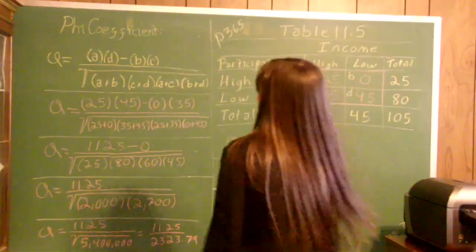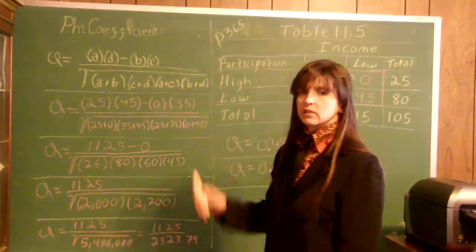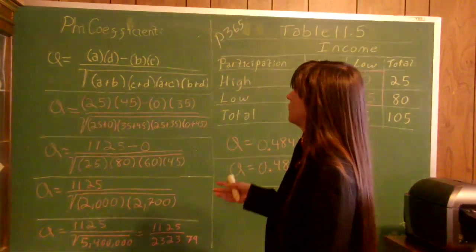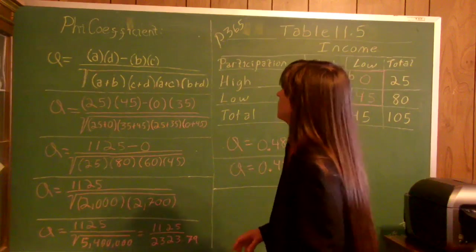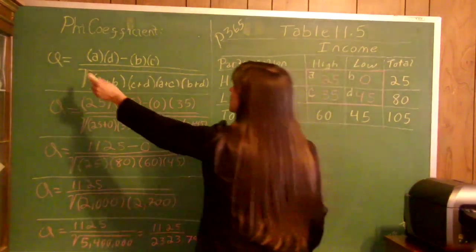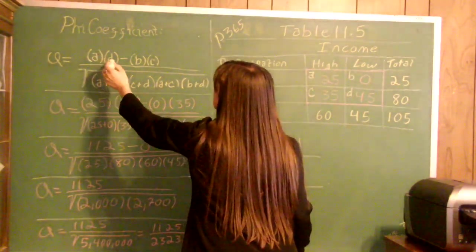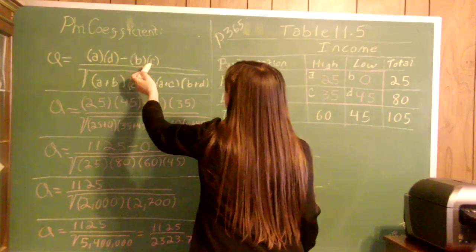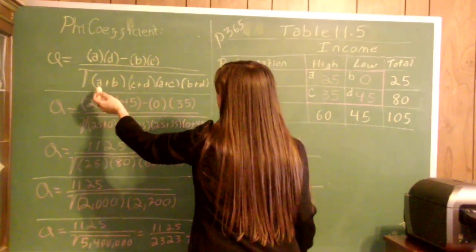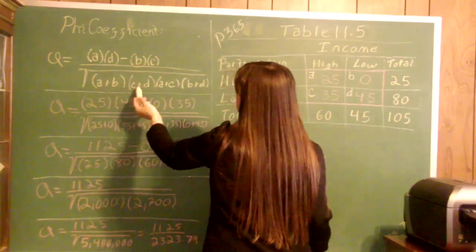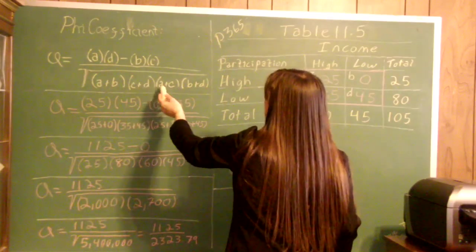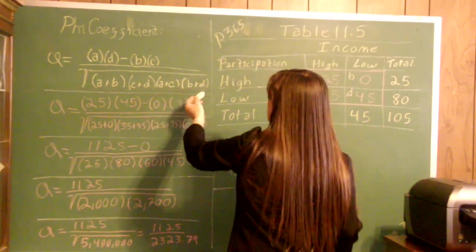Hello. This one is again from Sorkin Chapter 11. This is the V coefficient: V equals (A×D - B×C) over the square root of [(A+B)(C+D)(A+C)(B+D)].